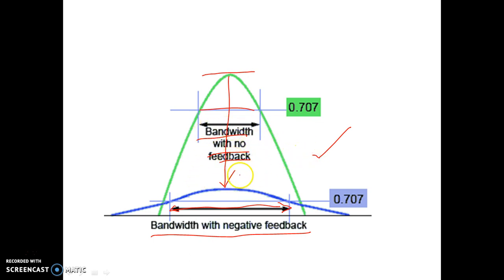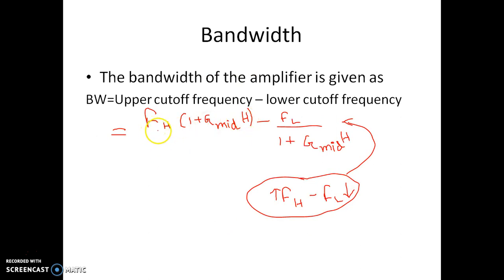In your lab, you will do several experiments related to this topic, like voltage shunt, voltage series, current shunt, and current series — these types of amplifiers you will perform in experiments. Remember that due to application of negative feedback, the bandwidth increases and the new bandwidth is equal to FH × (1 + G_mid × H) minus FL / (1 + G_mid × H). This is a very important formula for numerical purposes related to the analog electronic circuit paper on the feedback module. Keep this formula in mind.